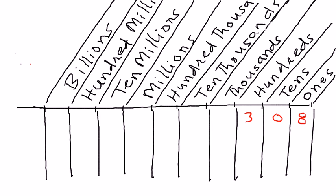Let us take another example: eight million, seven hundred and sixty-five thousand, four hundred and thirty-two. We start from the right: two, three, four, five, six, seven, and then eight. Two is in the ones place, three is in the tens place, four is in the hundreds place, five is in the thousands place, six is in the ten thousands place, seven is in the hundred thousands place, eight is in the millions place.